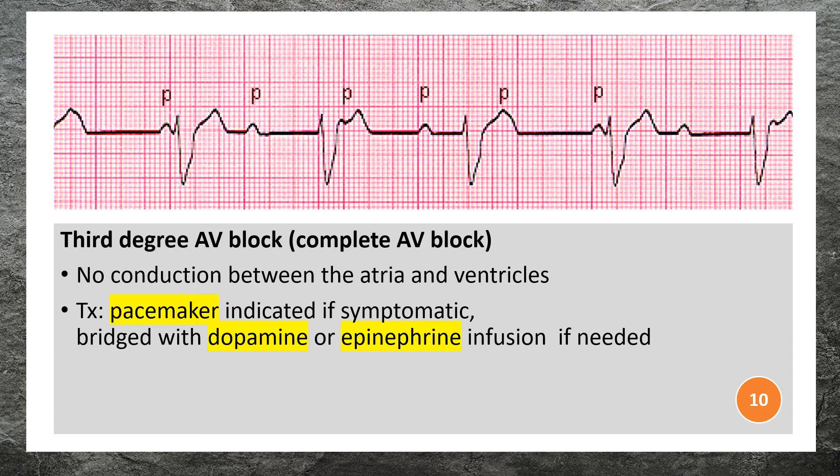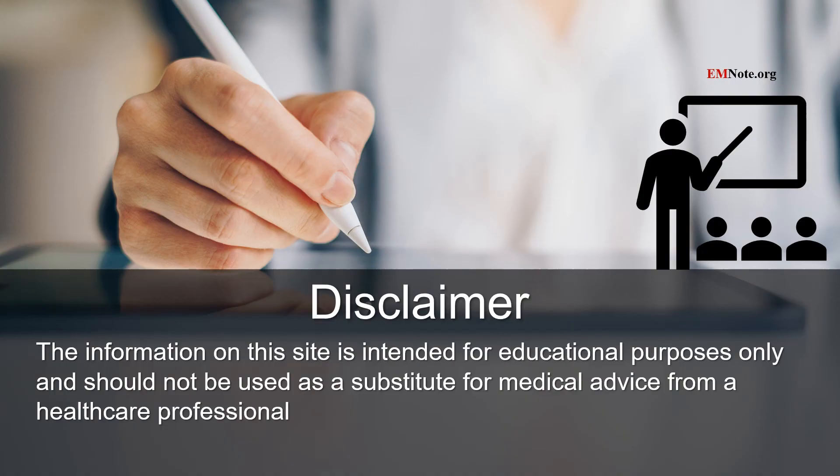Third degree AV block is characterized by no conduction between the atria and ventricles. Symptomatic patients may require a pacemaker, bridged with dopamine or epinephrine infusion.